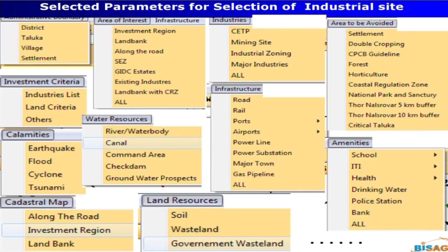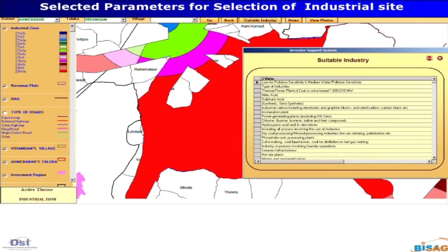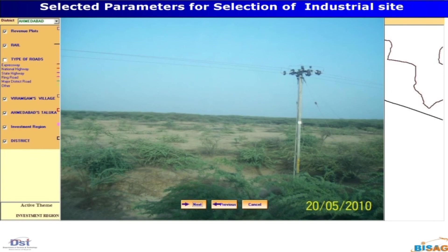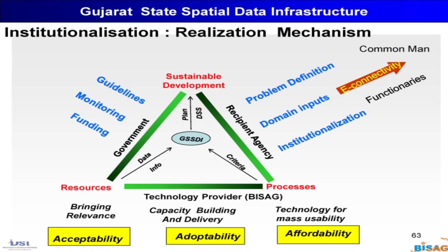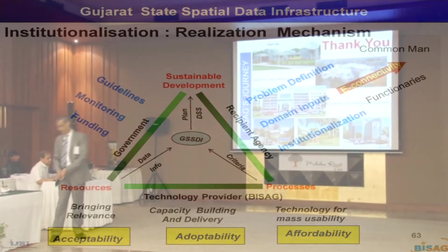If you want land for industry, there are 86 parameters to evaluate. The software allows you to just input your parameters, and it provides all the details — the field, the photograph. This is the model: government decides, gives the guideline, does the monitoring and funding. Centers like ours bring relevance, then acceptability, build capacity, and then adaptability, and make open software to bring affordability. Recipient organizations do the institutionalization, and things reach the common man with full functionality.